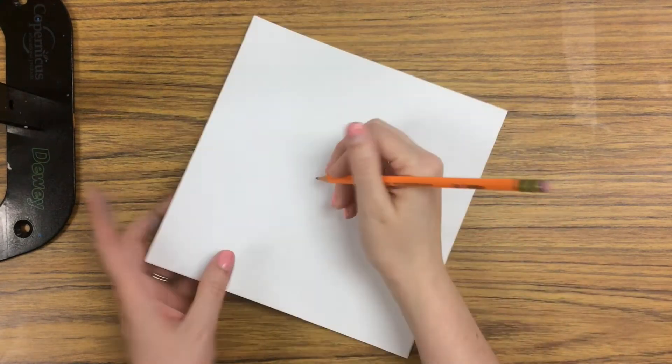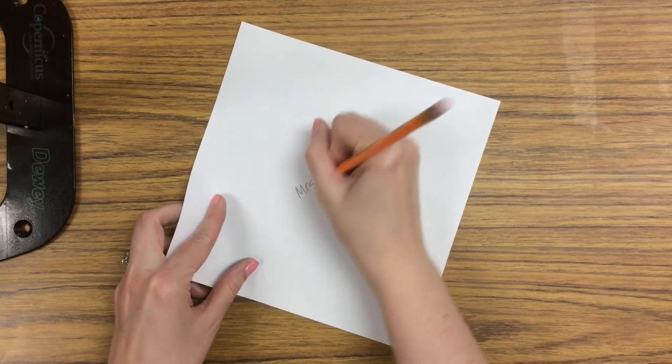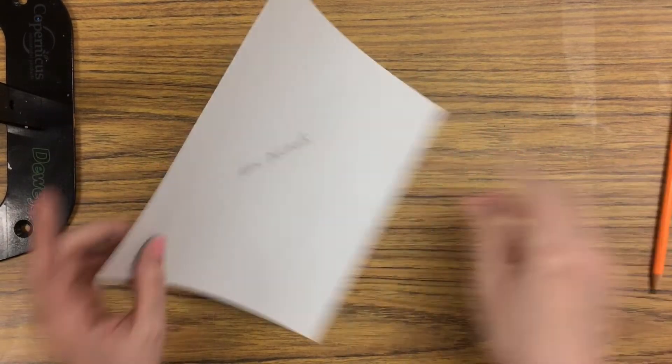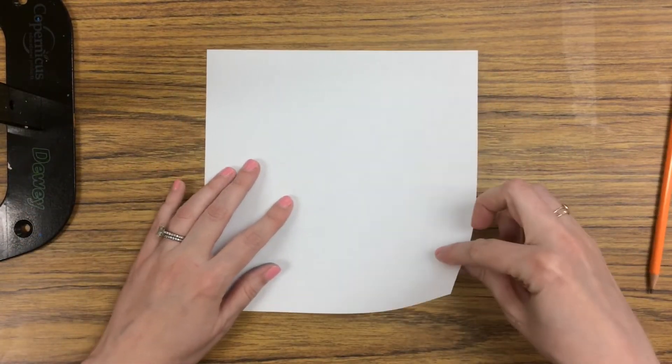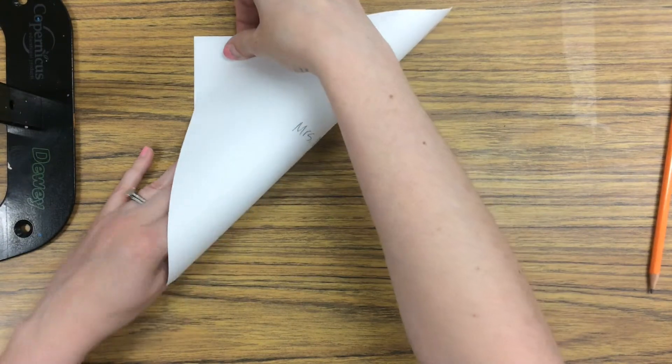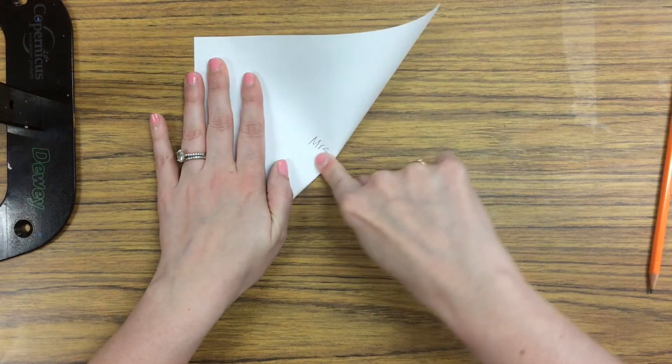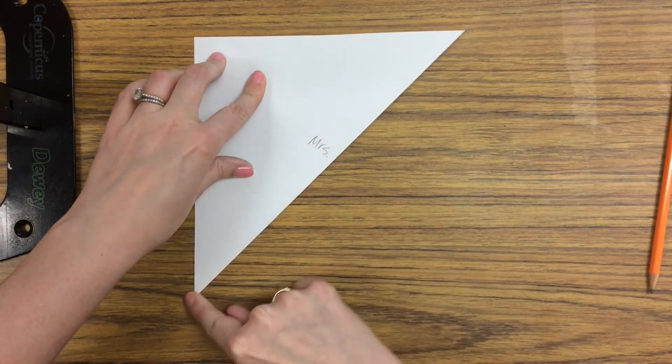Begin by writing your name on the back of your square paper. We will then fold our paper into a triangle, taking one corner diagonally across, lining up our edges. You always want to fold from the middle, sliding out to the right and the left.